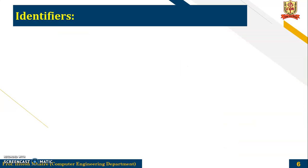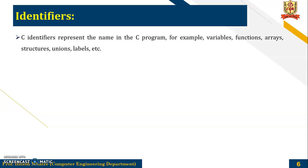That is the identifier. C identifier represents the name in C program. For example, variable, function, array, structure, union, label, etc. So any name for this is called as an identifier.